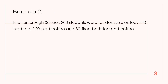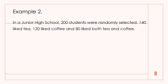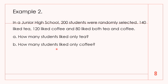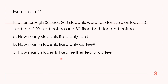Example number 2. In a junior high school, 200 students were randomly selected. 140 liked tea, 120 liked coffee, and 80 liked both tea and coffee. Question A: How many students liked only tea? B: How many students liked only coffee? C: How many students liked neither tea nor coffee?